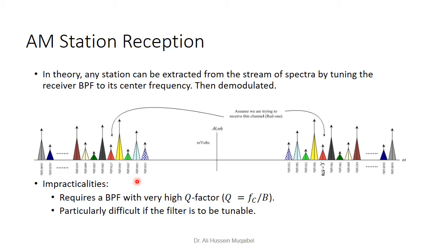Let's motivate the concept of superheterodyne reception. Looking at the entire spectrum, there are many channels. If we want to receive, say, the 570 kHz channel shown in red, we need a very sharp band-pass filter tuned to that frequency for demodulation. Changing channels requires retuning — so we need both a tunable and sharp filter, which is expensive. Such a filter requires high Q, since Q is the ratio of center frequency to bandwidth. This makes tunable, high-Q filters very difficult to design.